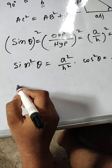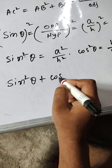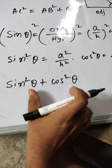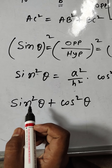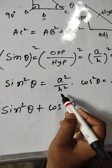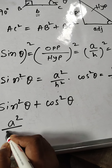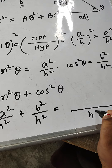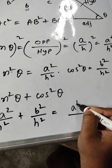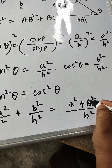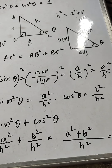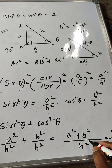Now we are going to prove sin square theta plus cos square theta equals 1. So sin square theta plus cos square theta: the value of sin square theta is A square by H square, and cos square theta is B square by H square. Taking the LCM of H square and H square we get H square, giving us A square plus B square over H square. According to Pythagoras theorem, H square equals A square plus B square, so substituting gives us H square over H square, which equals 1. Proved.